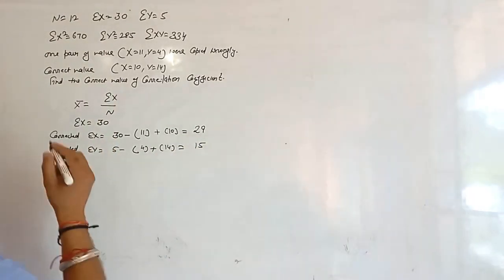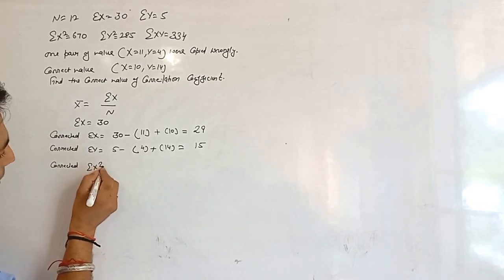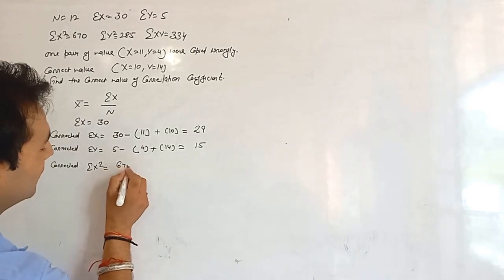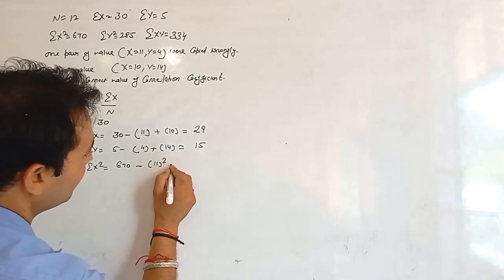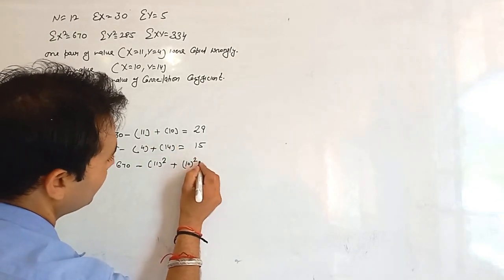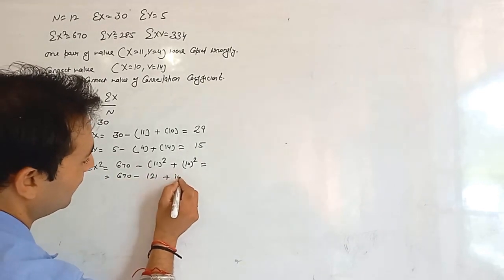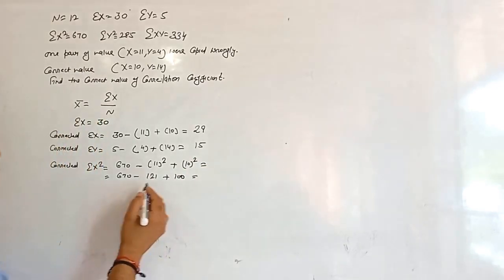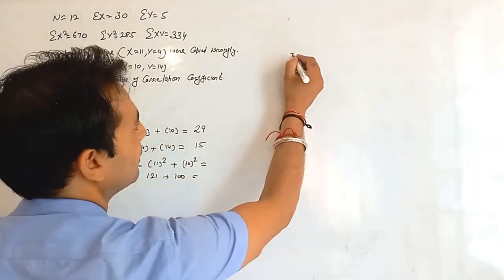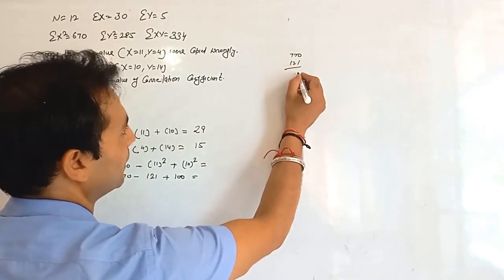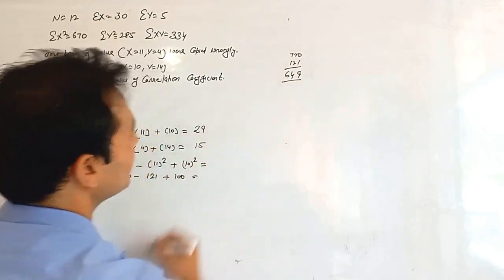Now we calculate the corrected summation x square: 670 minus the incorrect x square (11 squared = 121) plus the correct x square (10 squared = 100). That gives 670 minus 121 plus 100, which equals 649.